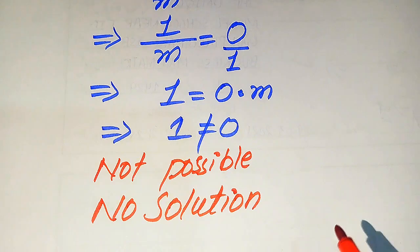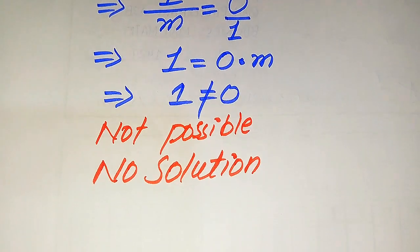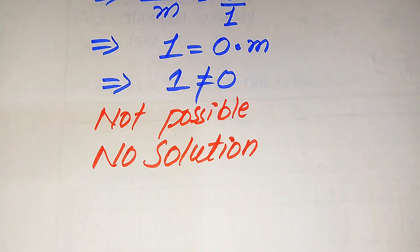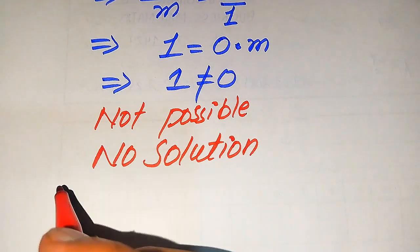Now I'll explain the difference between a solution and an extraneous root. The roots or values of x which satisfy the given equation are called the solution of the equation. The values of x which do not satisfy the given equation are called the extraneous roots. Since we cannot find any value of m, this question has no solution in general.